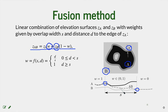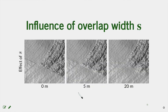Somewhere in the middle there is a point where both datasets are weighted equally. The weight is dependent on the distance within this overlap and the actual width of the overlap. If the overlap width is 0, you will get the sharp edge as in the basic patching case.